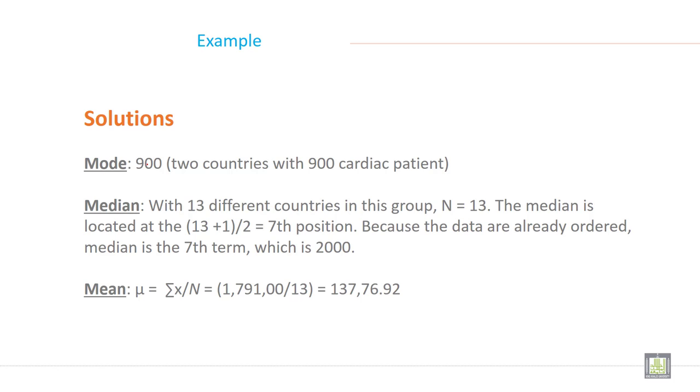The mode is 900 because 900 is repeated two times in the data set. Two countries have 900 cardiac patients. So 900 will be the mode for this given data.